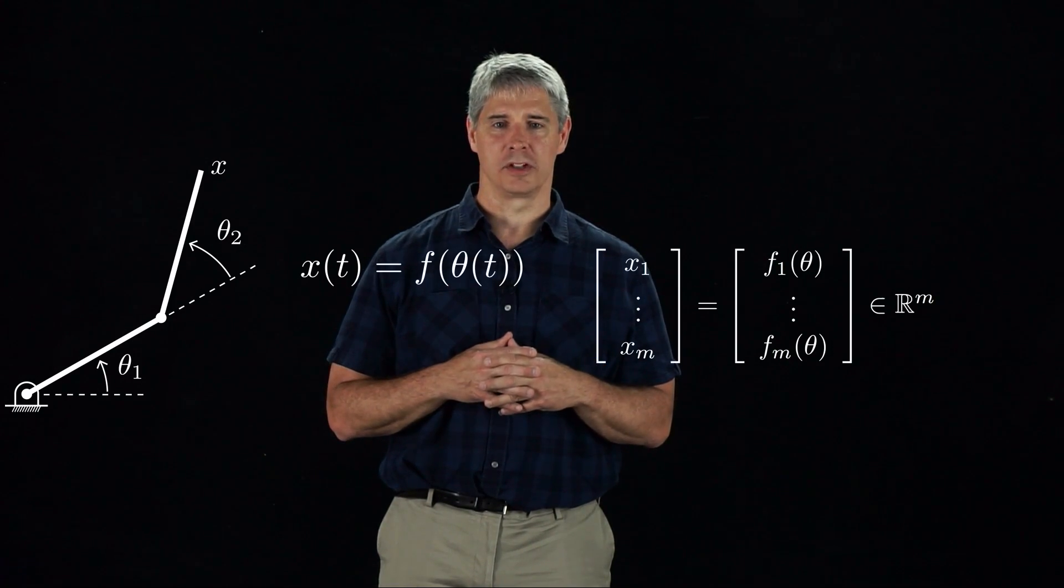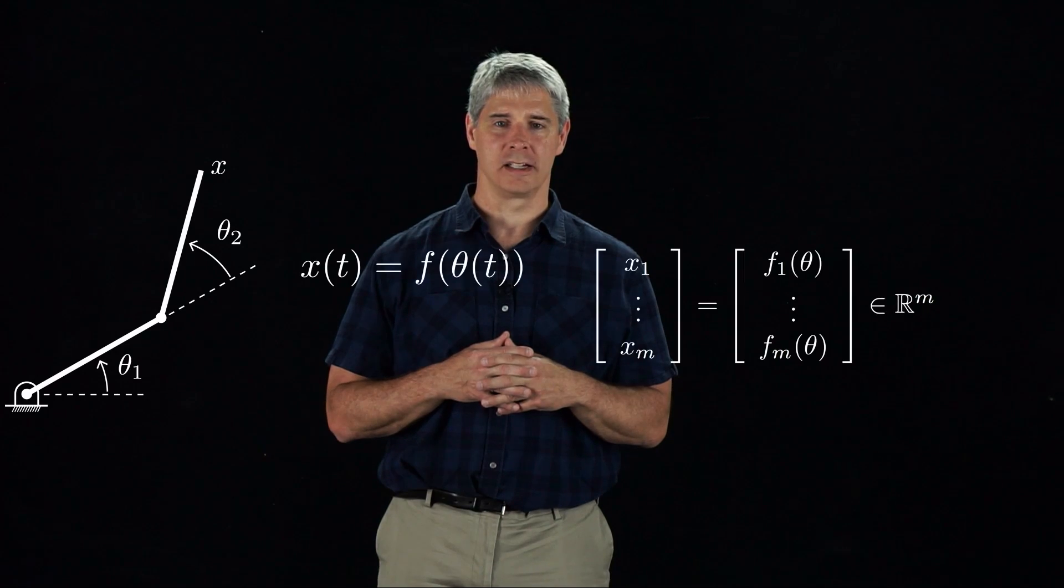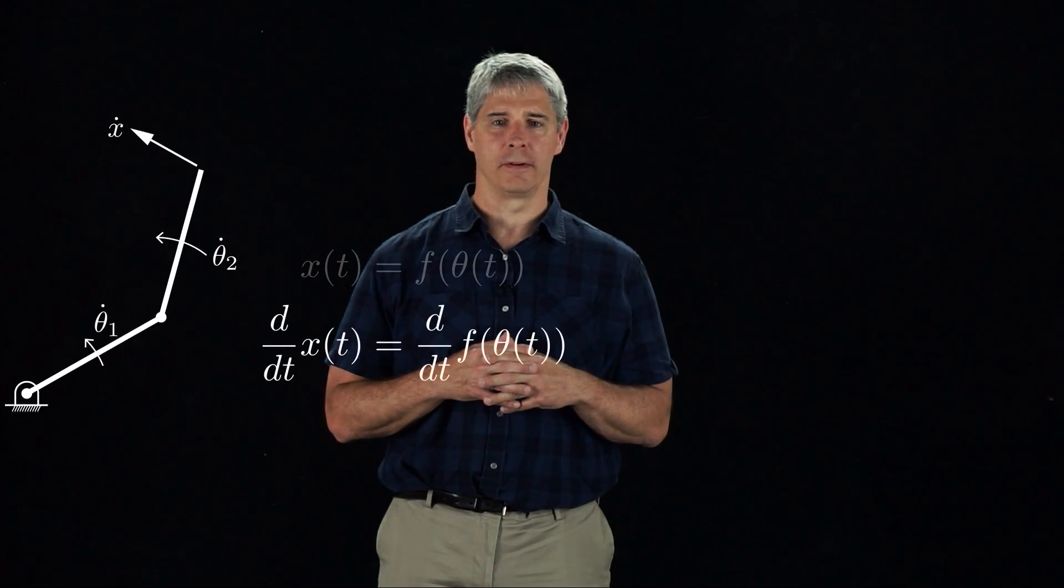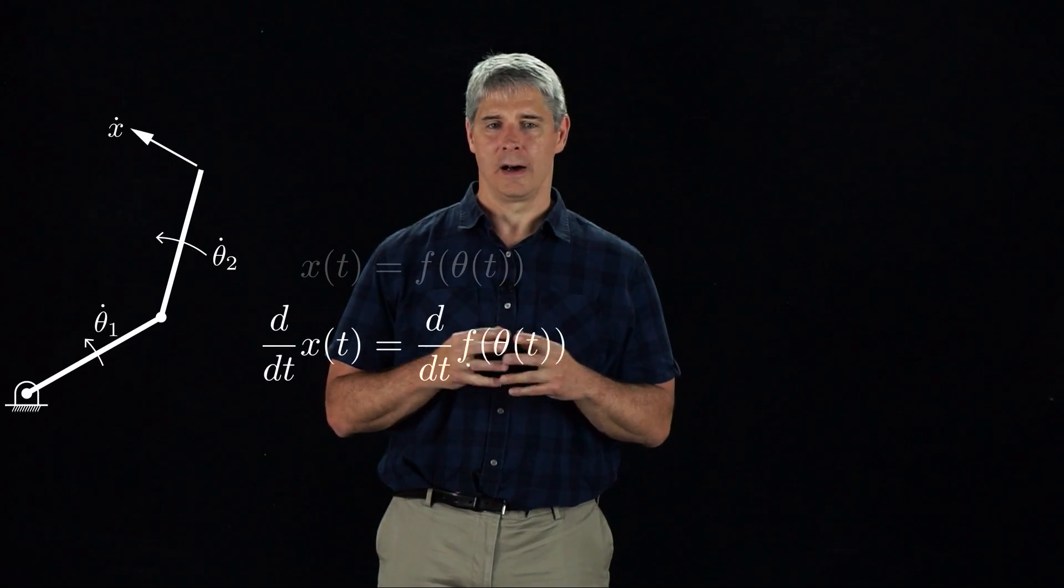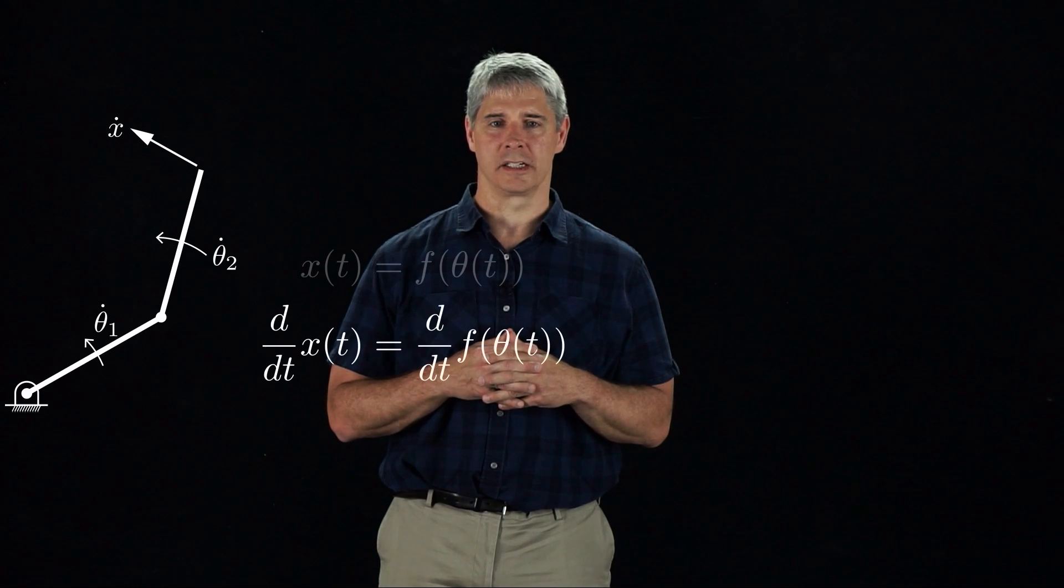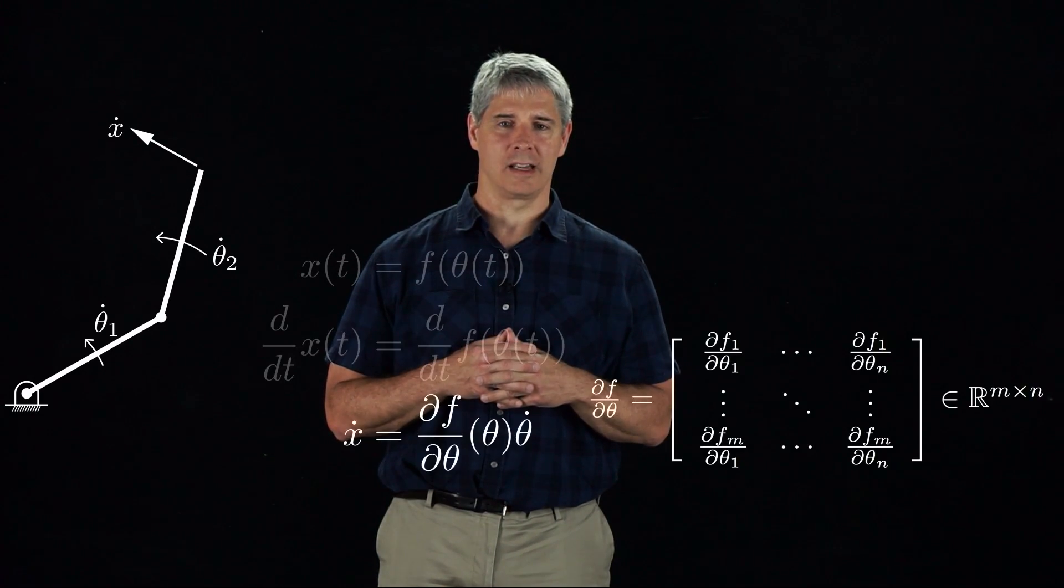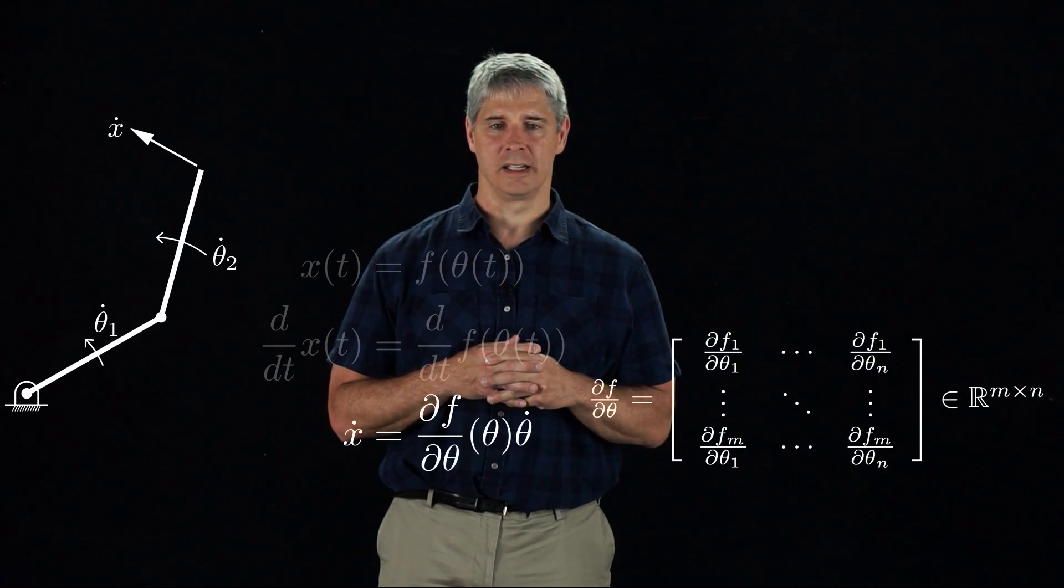To find the relationship between the joint velocities and the end effector velocity, we take the time derivative of the forward kinematics. Applying the chain rule for differentiation and dropping the dependence on time, we get x dot equals df d theta times theta dot.